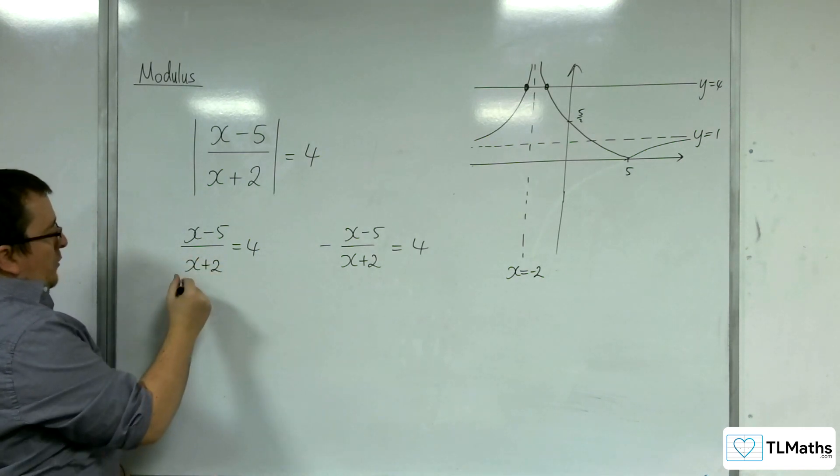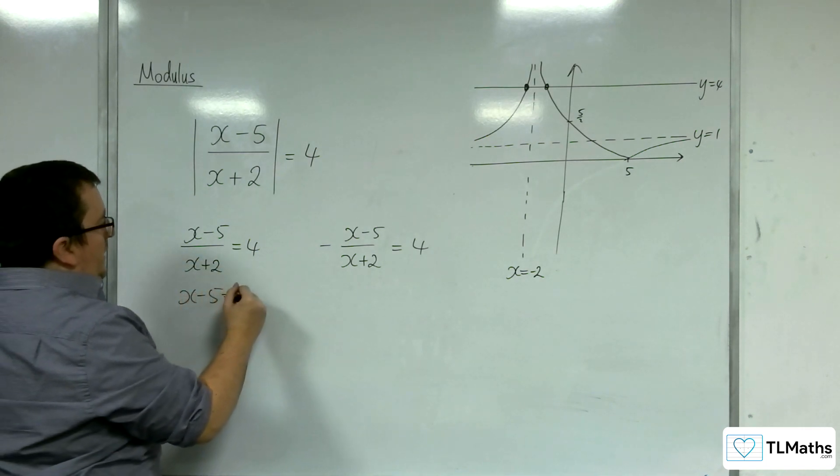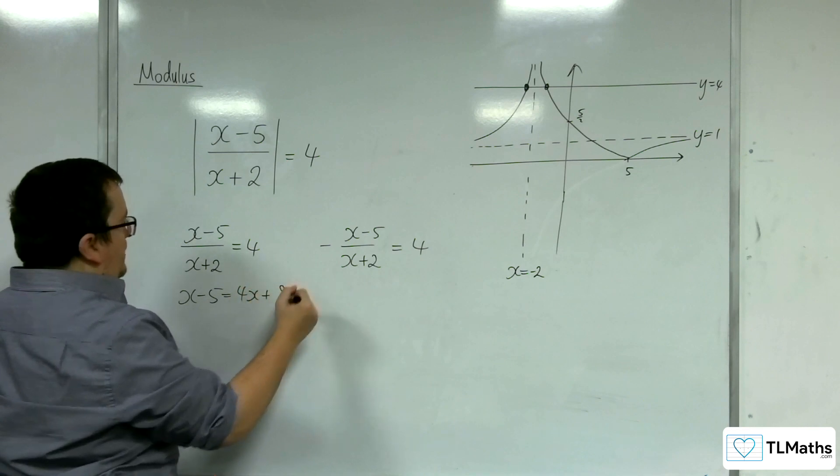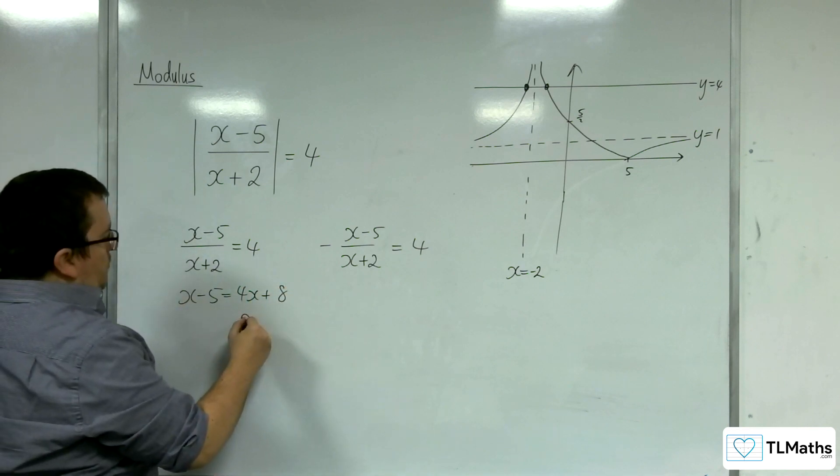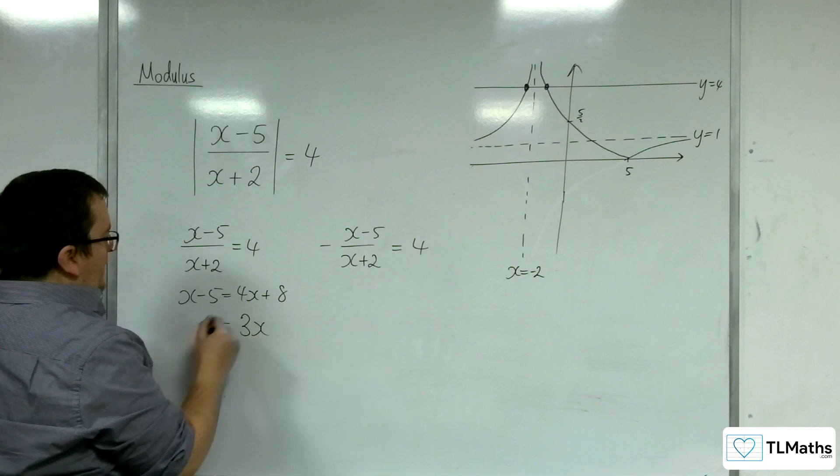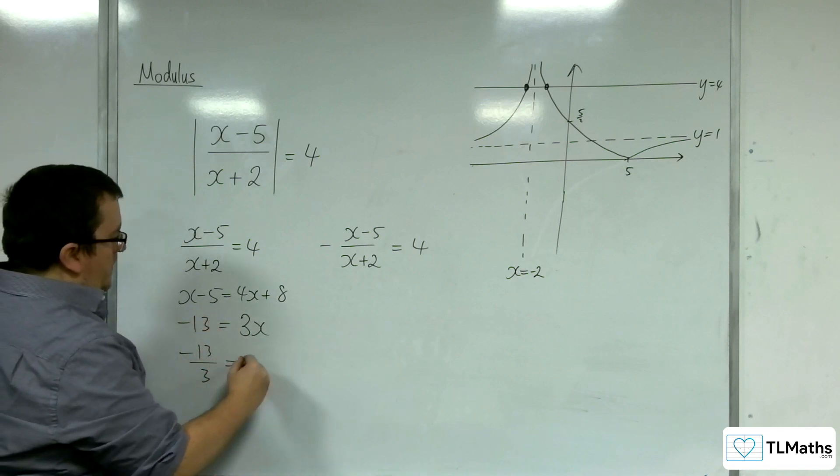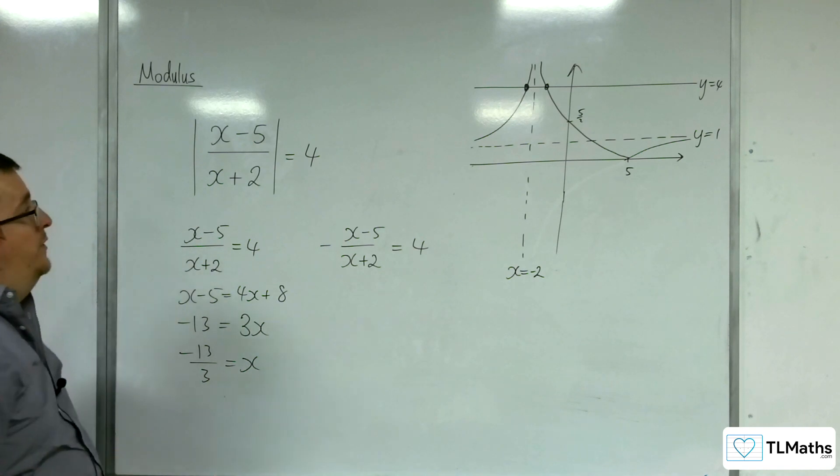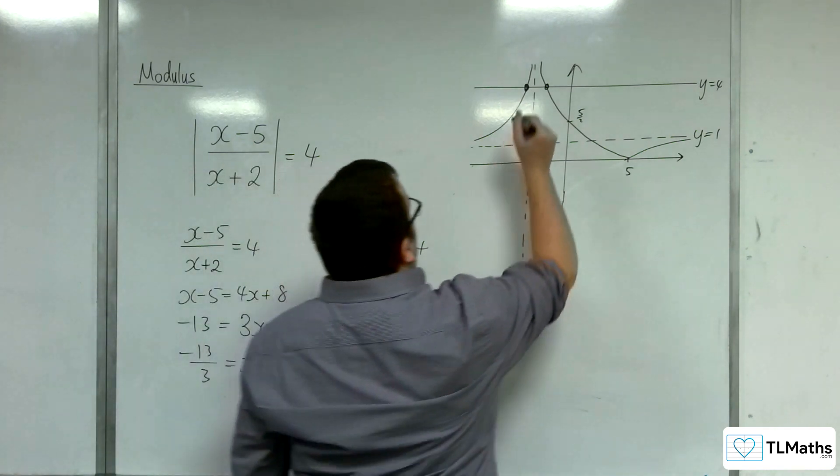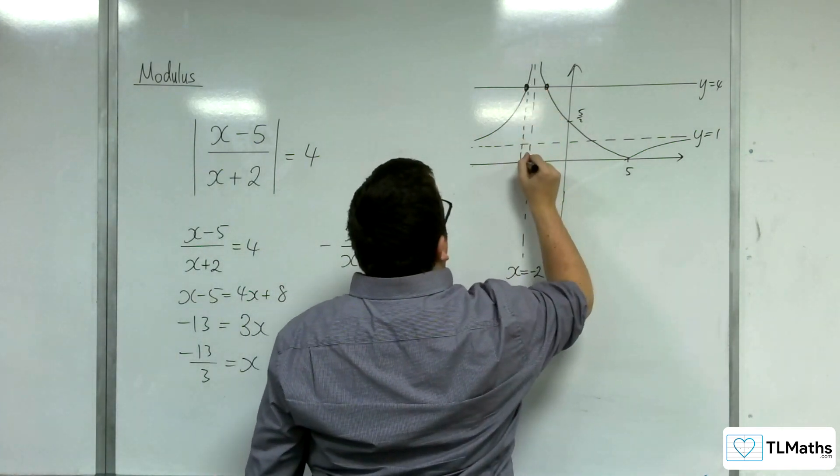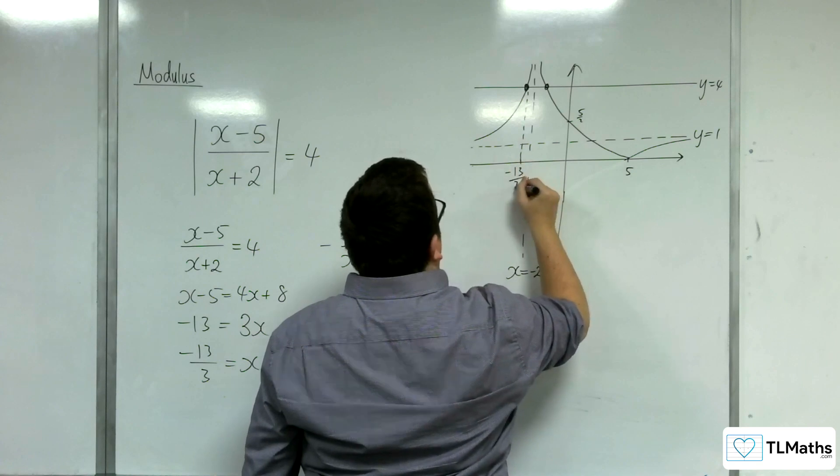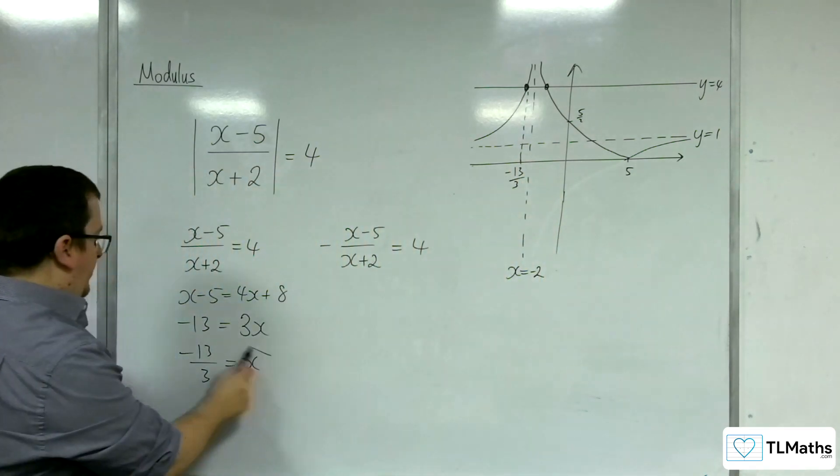Let's solve this one first. Multiply up by the x plus 2. So, x take away 5 is equal to 4x plus 8. Subtract the x from both sides. Subtract the 8 from both sides. And so, we get x is minus 13 over 3. That's our first solution.